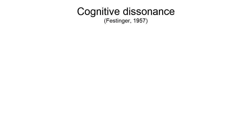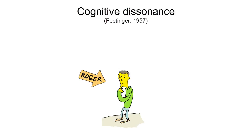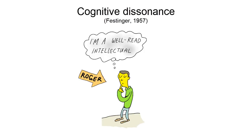I will explain with an example. Roger feels he is a well-read intellectual. His friends start talking about the classic book War and Peace. Everyone has read it except Roger. The belief that he is a well-read intellectual clashes with the fact that he is the only one amongst his friends who hasn't read this classic.